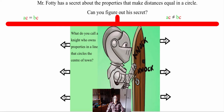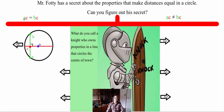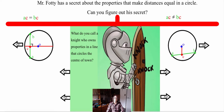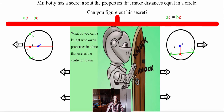On this side, line segment AC is equal to line segment BC. On this other side, AC is not equal to BC — so line segment AC is not equal to BC. These are not bisected.